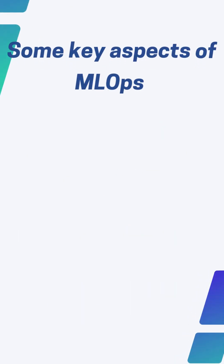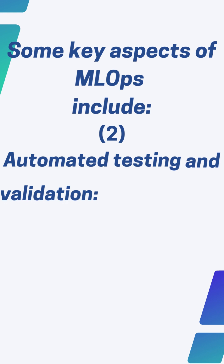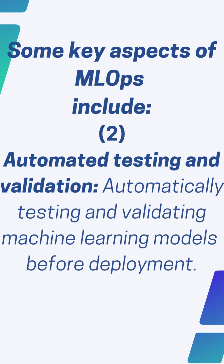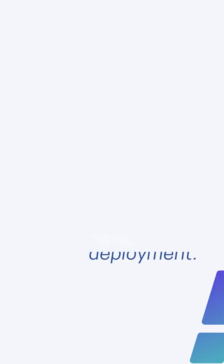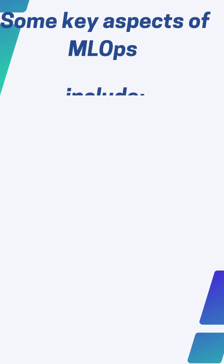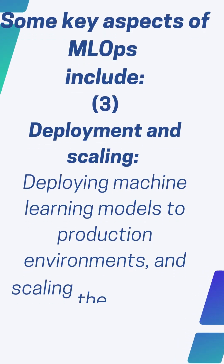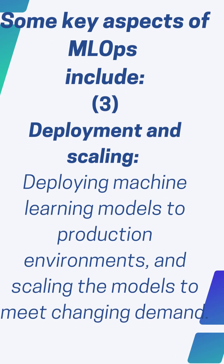Second, automated testing and validation: automatically testing and validating machine learning models before deployment. Third, deployment and scaling: deploying machine learning models to production environments and scaling the models to meet changing demand.